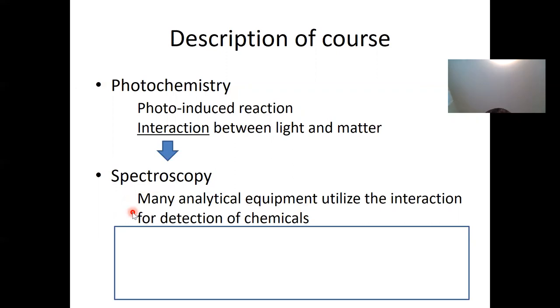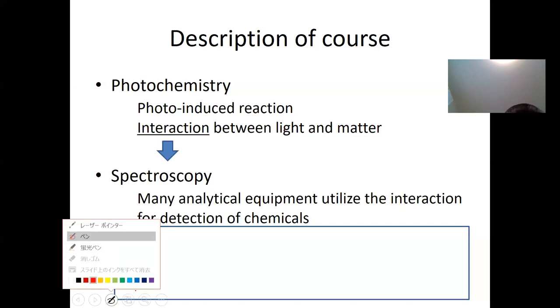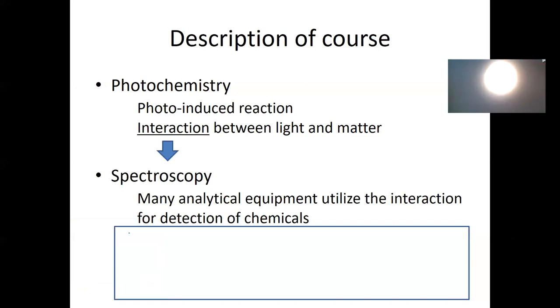So here, briefly stop the video and think about what kind of analytical equipment you can think of where the interaction between light and matter is utilized. Okay, so let's check some of the answers. Obviously, UV visible absorption spectrum is utilized, and here, of course, UV light, visible light, and infrared light are utilized for detection of the chemicals by using light absorption.